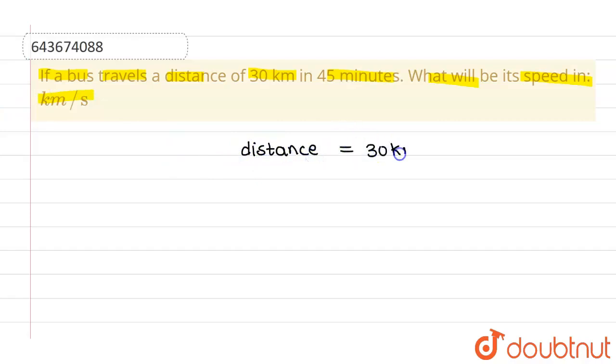And the given time is 45 minutes. So we have to find out the speed of this particular bus. We know a relation which relates distance, time, and speed.